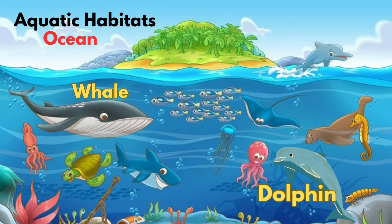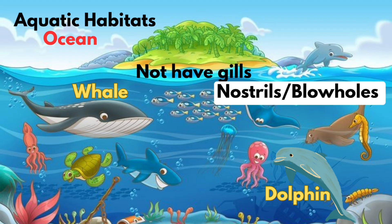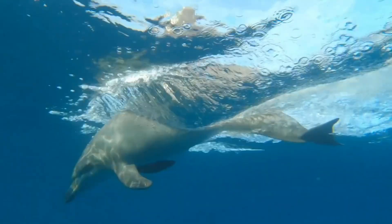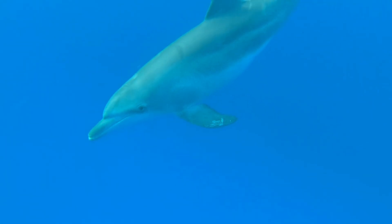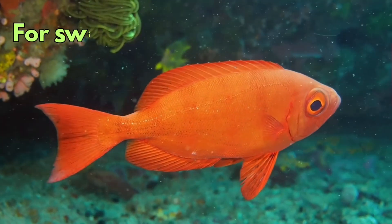Some animals such as dolphins and whales do not have gills for breathing. They have nostrils or blowholes located on their upper body. They come to the surface of the water to obtain oxygen. They store as much oxygen as they can, and then dive. In the sea, they use this stored oxygen for a long time.